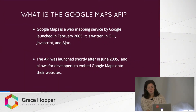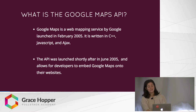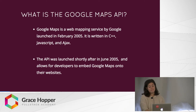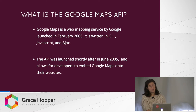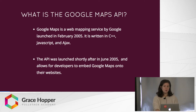Google Maps, as I'm sure you all know, is a web mapping service that was launched in February of 2005. It's written in C++ and on the front end, JavaScript and Ajax. The API was launched shortly after in June 2005 and allows developers to embed Google Maps on their websites.